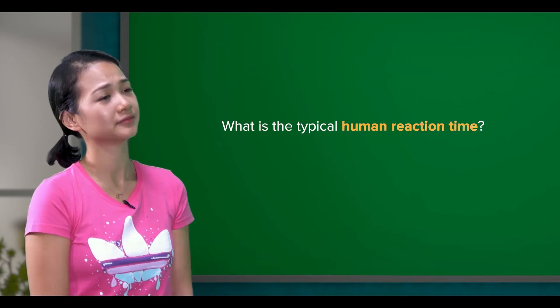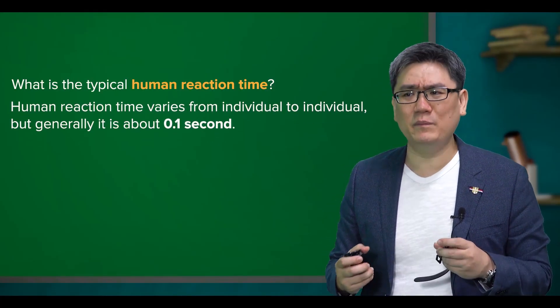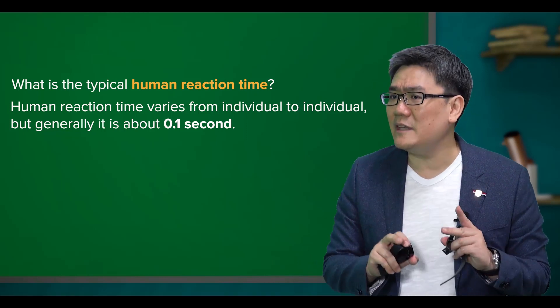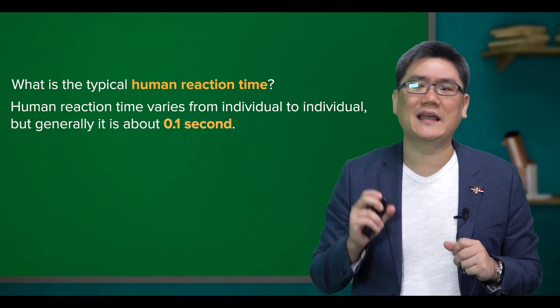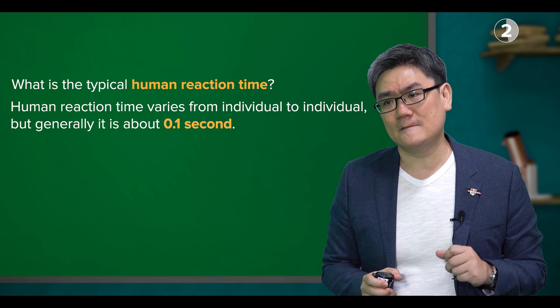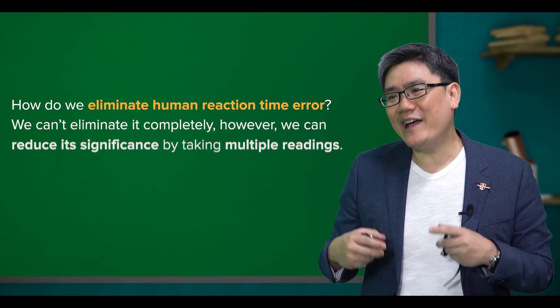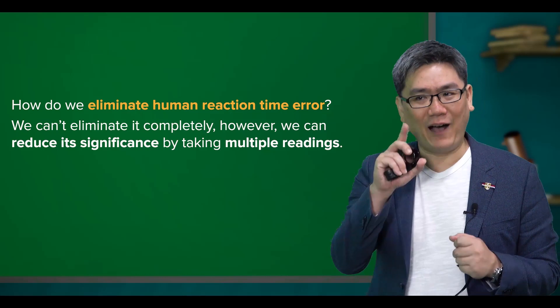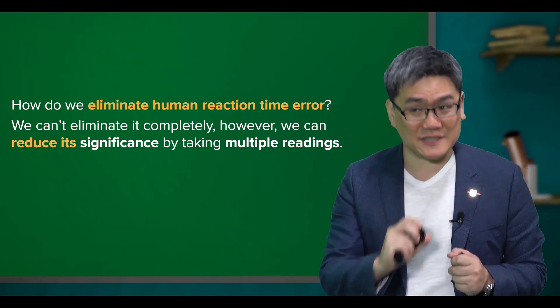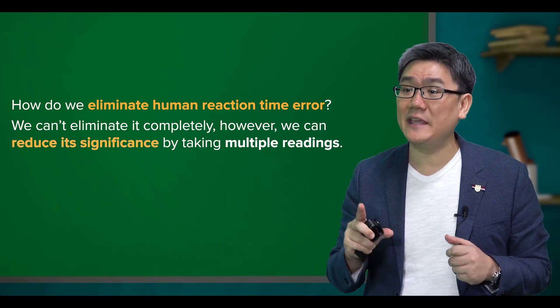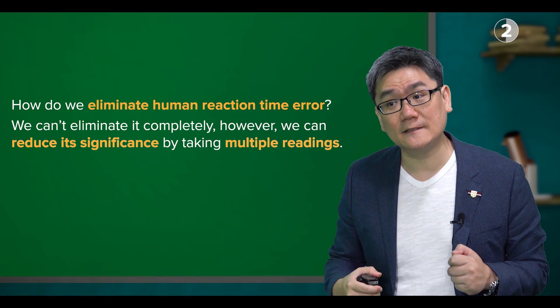I see. What is the typical human reaction time then? Well, it varies from individual to individual, but generally it is about 0.1 seconds. I see. Then teacher, how do we eliminate this random error? We can't eliminate it completely. However, we can reduce it significantly by taking multiple readings. Then calculate the average of the readings? Yes.